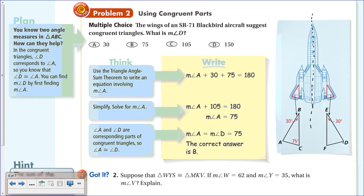We know that angle D is congruent to angle A from corresponding parts. So if we find angle A, we have angle D as well. We know all three angles in the triangle must add up to 180. So: measure of angle A + 30 + 75 = 180. Combining 30 and 75 gives 105, so angle A + 105 = 180, meaning angle A = 75 degrees.